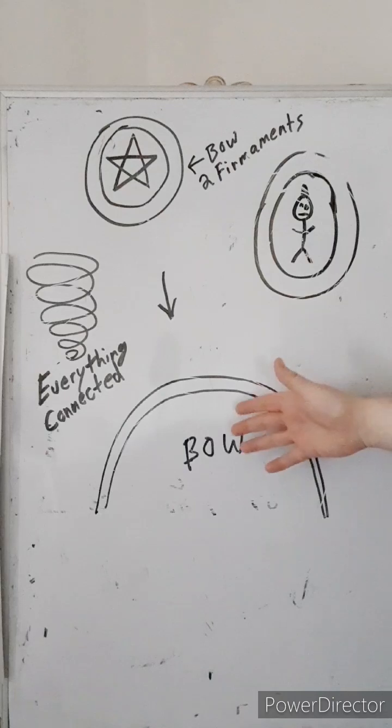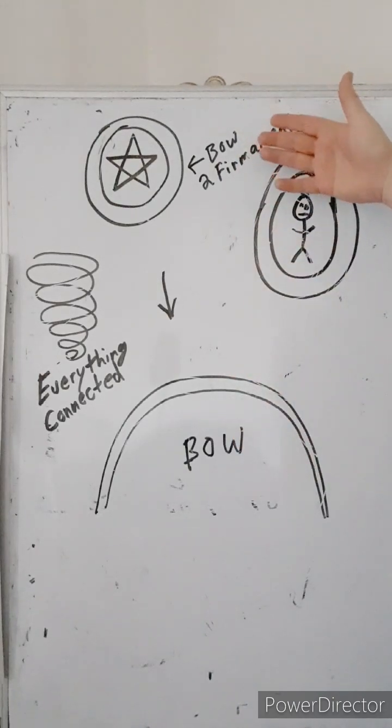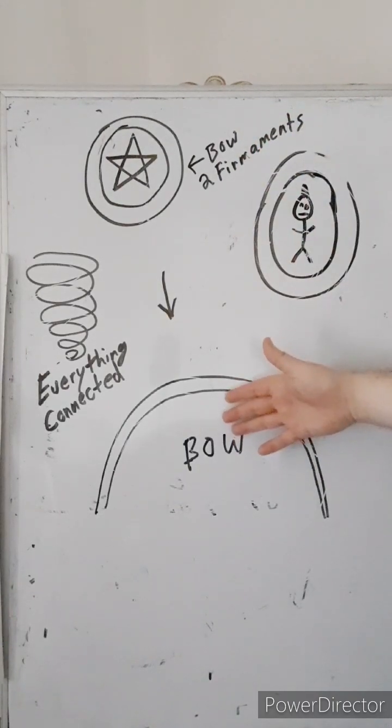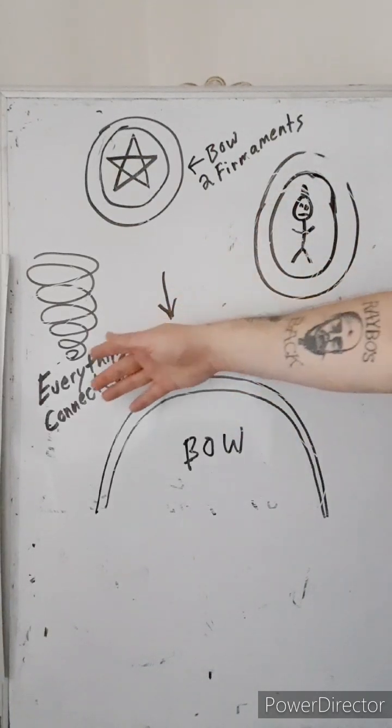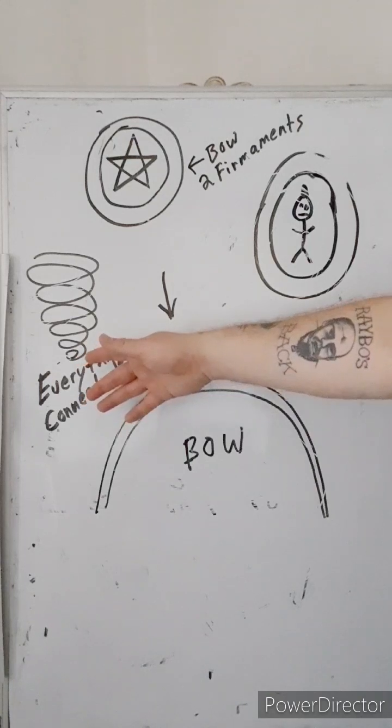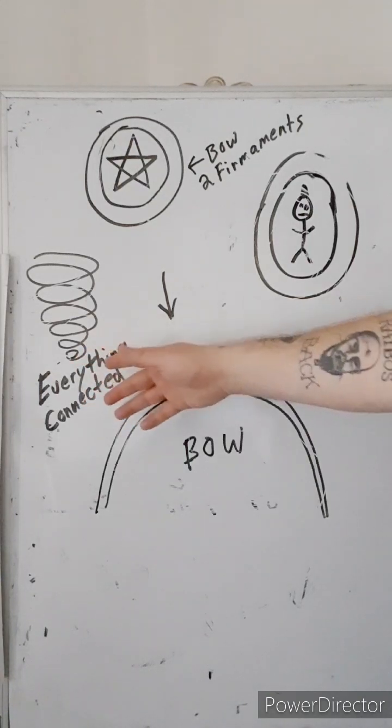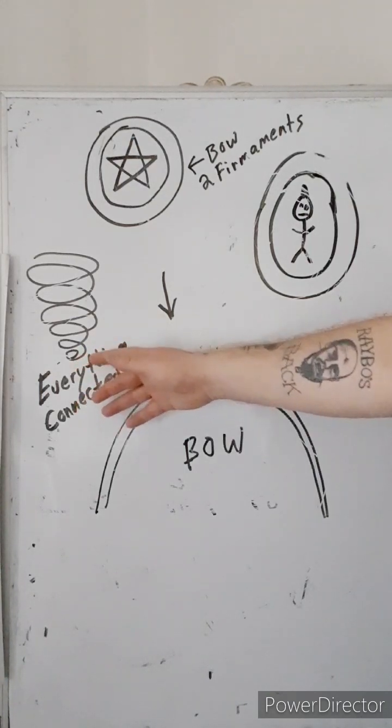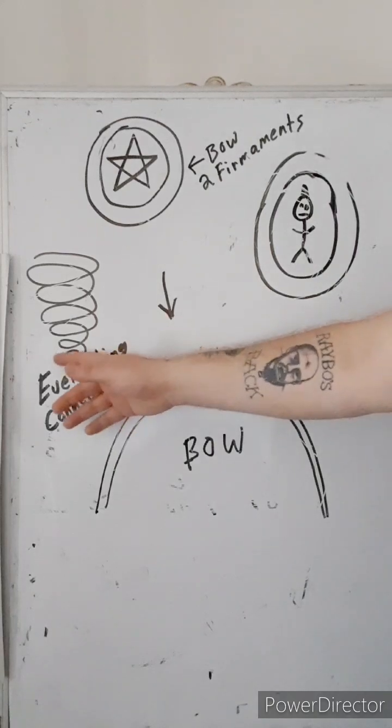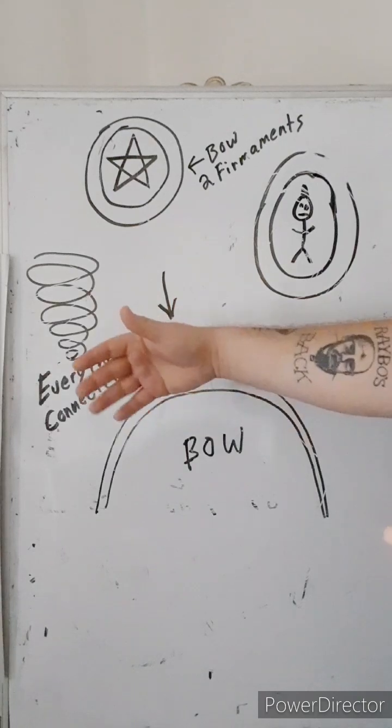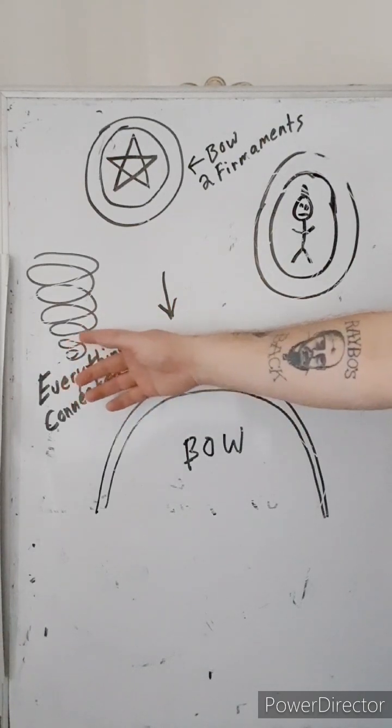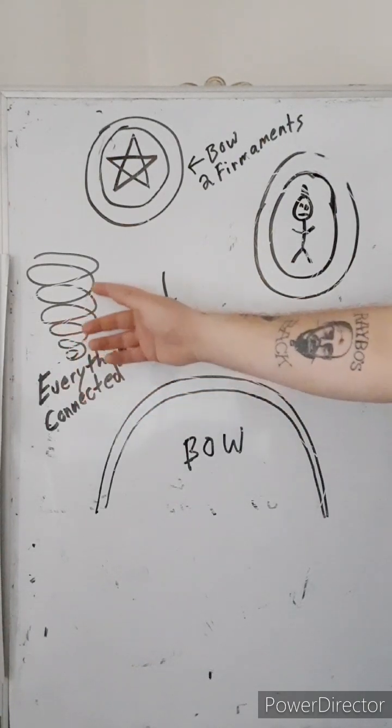When you see earthly things, it's a shadow of the heavenly things. But earthly things always fade away. And then the growth, how it starts, it starts on the molecular level. It actually starts in the invisible realm. But it starts on the molecular level. And it gets bigger and bigger and bigger.